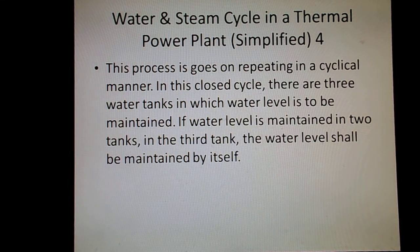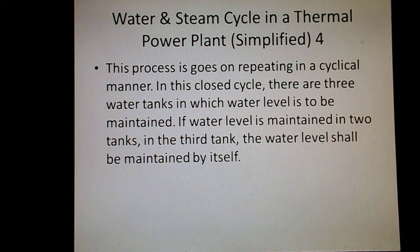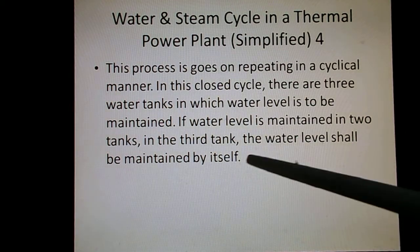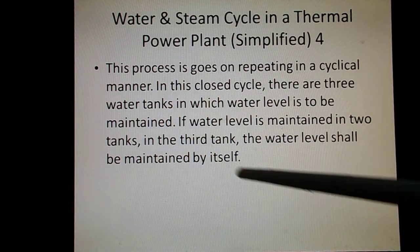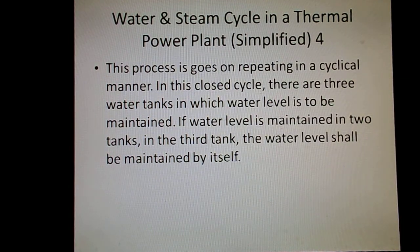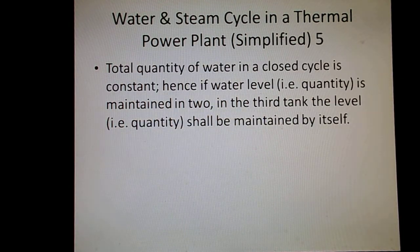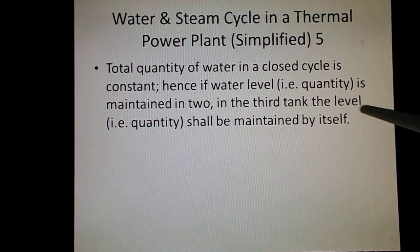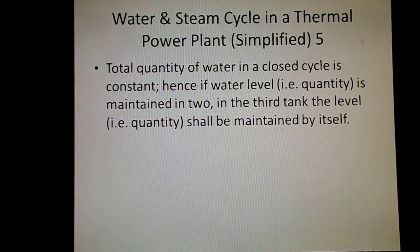The process repeats in a cyclical manner. In this closed cycle, there are three water tanks in which water level is to be maintained. If water level is maintained in two tanks, the level in the third tank will be maintained by itself, since the total quantity of water in the closed cycle is constant.